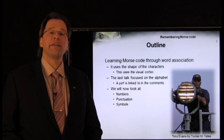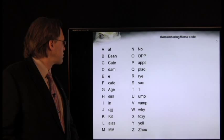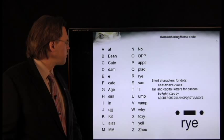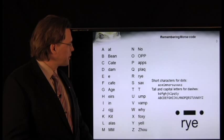Now we're going to look at numbers, punctuation, and symbols. In the last talk we looked at the alphabet, and we saw that short letters could be used to represent dots, while tall letters and capitals could be used to represent dashes. For example, the Morse code for R could be remembered by learning the word rye, as in rye whiskey.